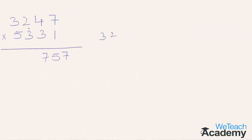In the fourth step, 7 into 5 is 35, plus 3 into 1 is 3, giving 38; plus 4 into 3 is 12, giving 50; plus 3 into 2 is 6, giving 56. Plus the earlier carry of 3, 56 plus 3 is 59. So 9 is taken to the final result and 5 is carried to the next step. In the fifth step, 3 into 3 is 9, plus 5 into 4 is 20, giving 29; plus 2 into 3 is 6, giving 35. Plus the carry of 5, that is 40. So 0 is taken to the final result and 4 is carried forward.